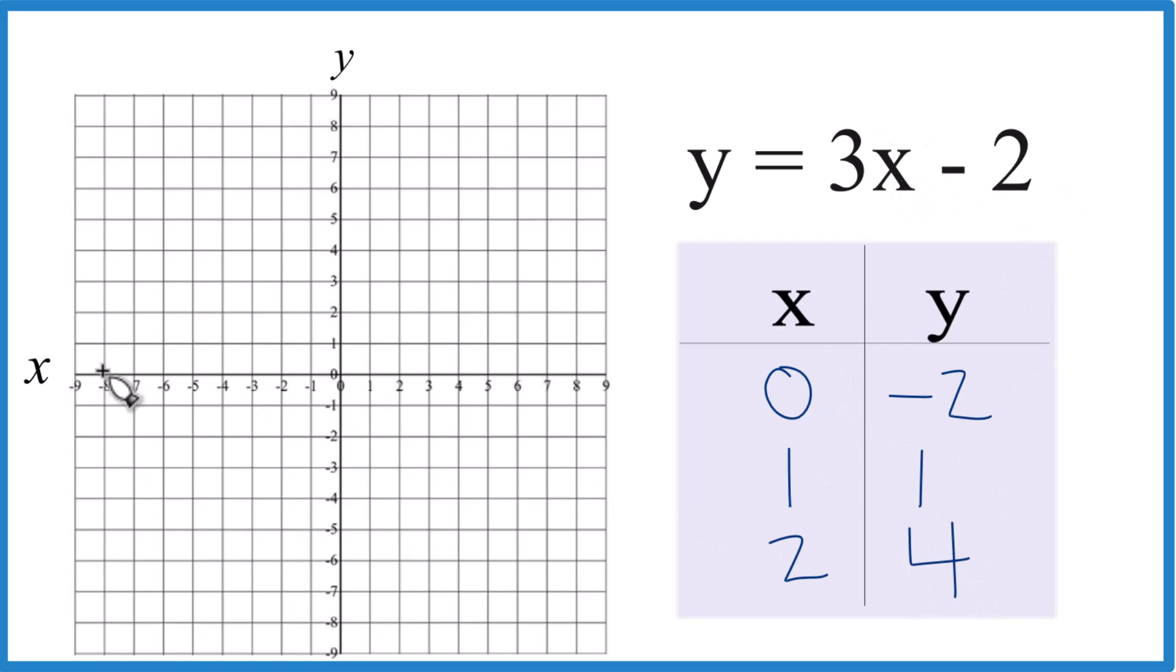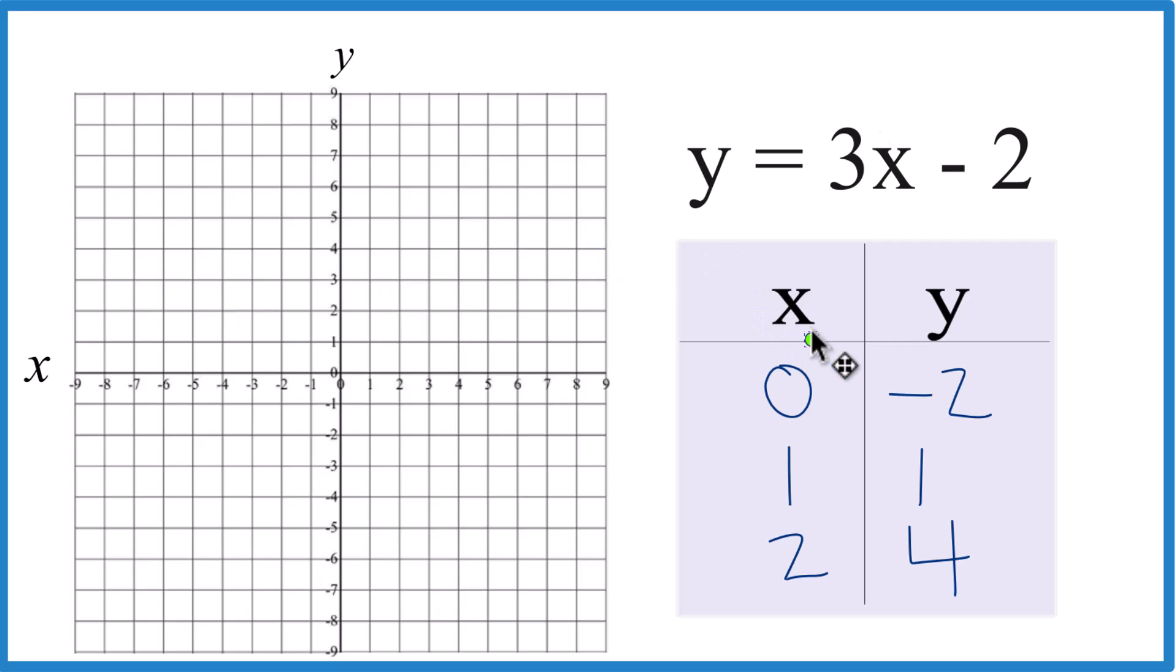So now we have these points. Let's graph them. We have x is 0, y is -2 right there. That's our first point. X is 1, y is 1. You could graph it with just 2 points, but it's nice to have 3 in case you made a mistake.